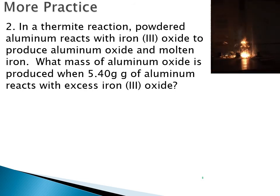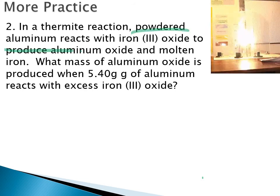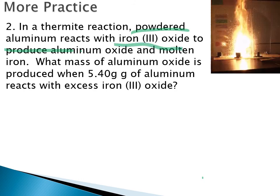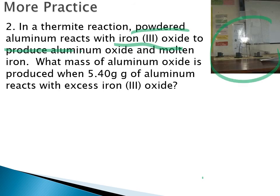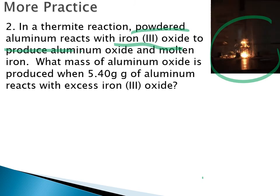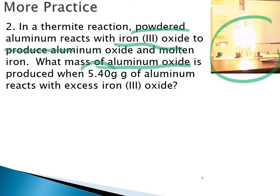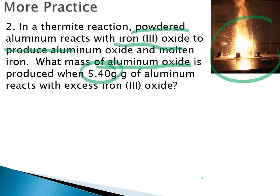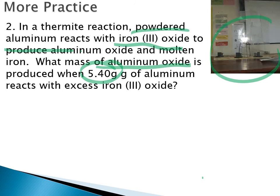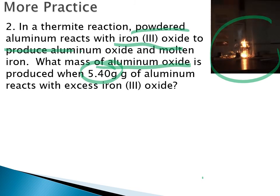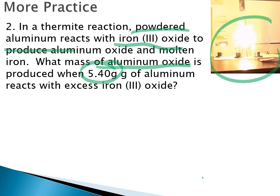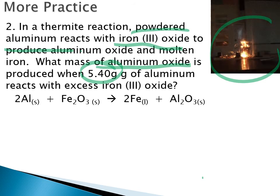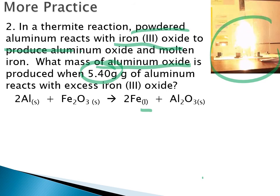Now the thermite reaction: powdered aluminum reacts with iron(III) oxide in a single displacement reaction between two solids. The aluminum and iron switch places; we end up with molten iron being produced and aluminum oxide left over. You can see the reaction on the side of the screen. The question asks: what mass of aluminum oxide is produced when 5.40 grams of aluminum react with excess iron(III) oxide? First step: write the balanced chemical equation.